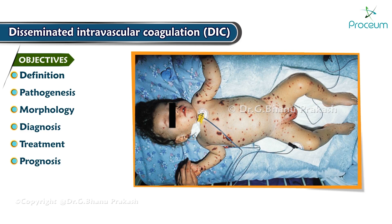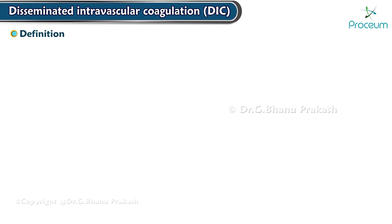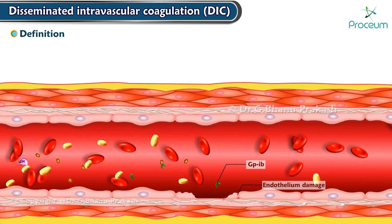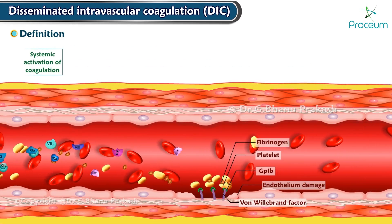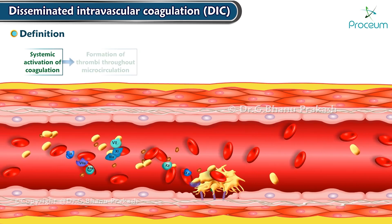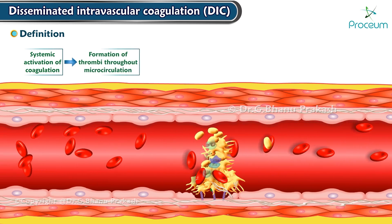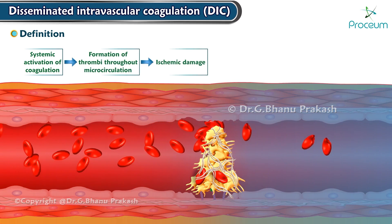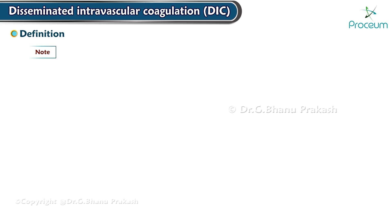Disseminated Intravascular Coagulation — Definition. It is a common acquired coagulation disorder characterized by diffuse small vessel thrombosis and hemorrhage, and hence it's a thrombohemorrhagic disorder. It is caused by systemic activation of coagulation which leads to the formation of thrombi throughout the microcirculation, producing widespread ischemic damage. Note that DIC is also called consumptive coagulopathy.